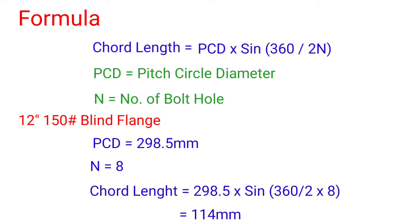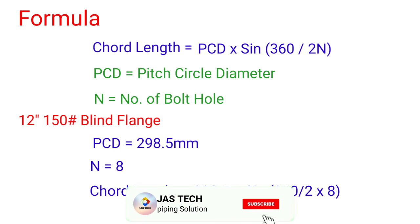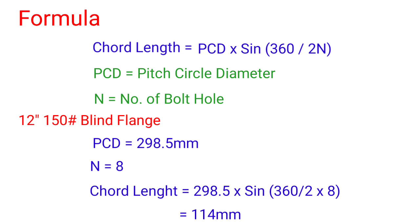The second method to find out the chord length is by using direct formula. Chord length formula: chord length equals PCD times sin of 360 divided by 2N.